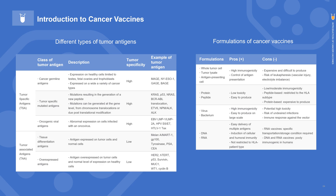Each of these formulations has their unique advantages and disadvantages. For instance, the use of peptides compared with whole-cell lysates or proteins has an advantage that only the epitopes of interest can be delivered to the immune system, instead of overloading immunologic pathways with irrelevant antigens that might compete with the relevant epitopes or might induce autoimmune responses.